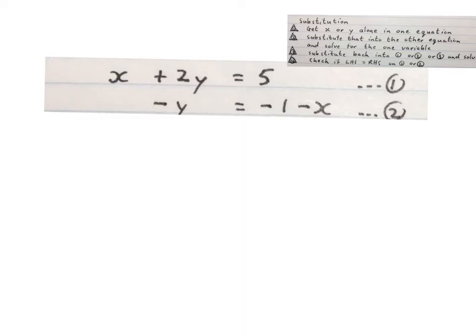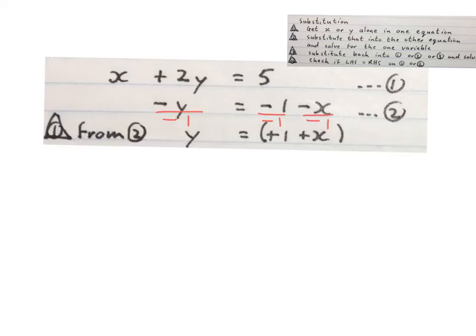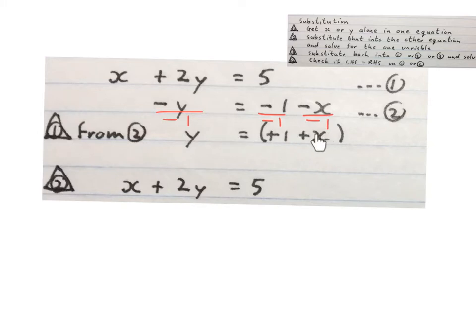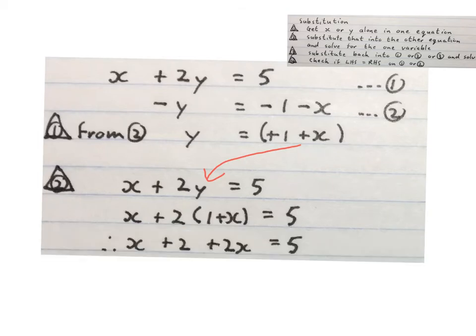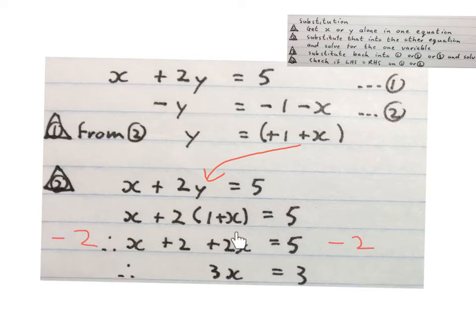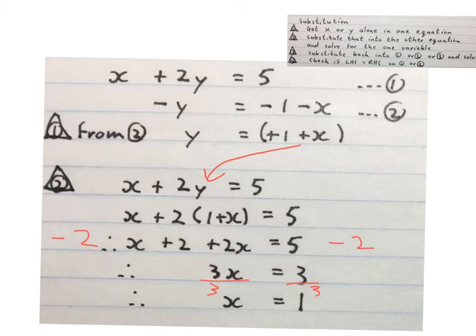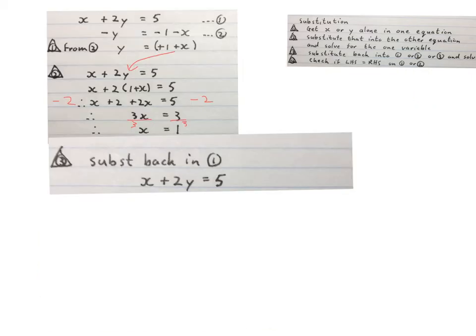For the next problem they give us two equations and say solve for X and Y simultaneously. We number the equations: the top one is one and the second one is two. Next, get either X or Y alone in any one of the two equations. I took equation two and from it I get Y equals one plus X by dividing through by minus one. Then I substitute this into the first equation, replacing Y with one plus X in brackets, and simplify for X. Adding like terms and rearranging gives three X equals three, so X equals one. Stop the video and make sure you understand what happened up to here.